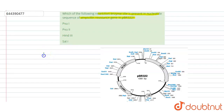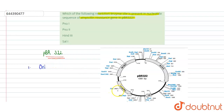pBR322 is a very common plasmid used as a vector for carrying foreign DNA, widely used in genetic engineering experiments. It contains a major component: the ori, that is, the origin of replication, which is a requirement of every plasmid — it has its own ori through which it can replicate.